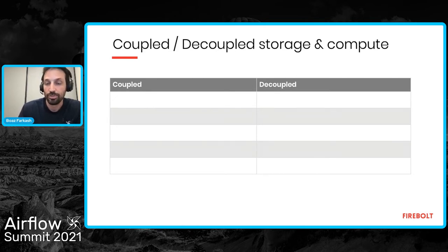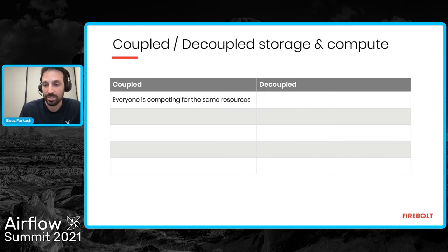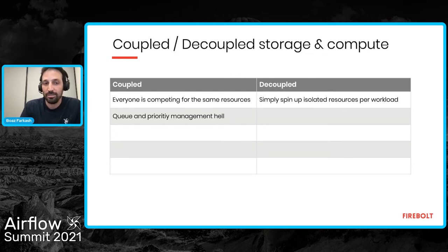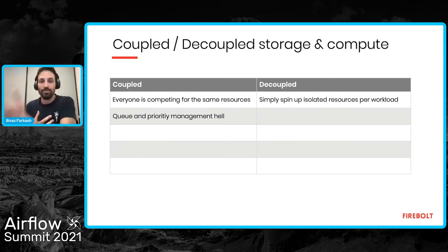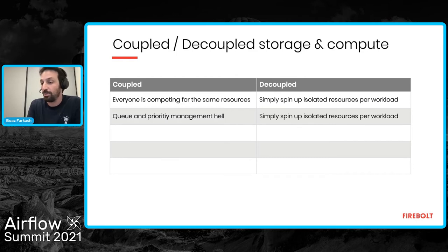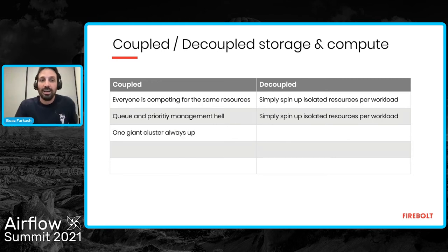In the old coupled world, every workload competed for the same resources in the same cluster. In the decoupled world, you can spin up isolated resources per workload. In the coupled world, you spend a lot of time worrying about queues, priority management, making sure queries from department A don't slow down department B or production queries. In the decoupled world, you can simply spin up isolated resources per workload — every department gets different resources, there's no competition, and you can guarantee different SLAs for different workloads.